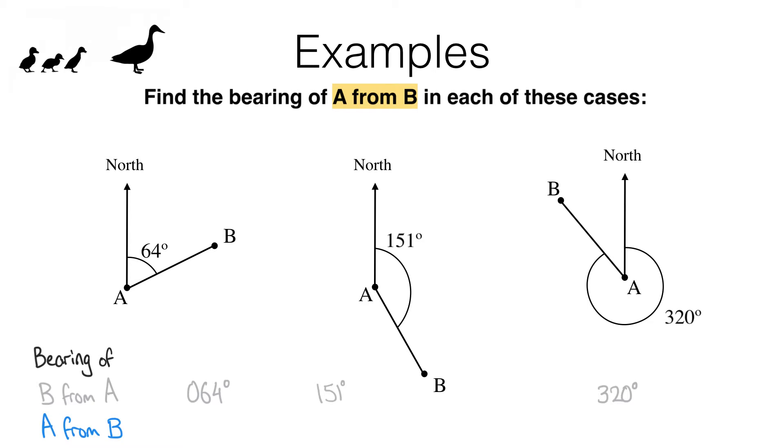Let's look at the first one. If you've seen the previous videos, you should be comfortable with the idea that the bearing of B from A is 064 degrees. But as I've said, that's not what this question is asking for. We need to find the bearing of A from B.